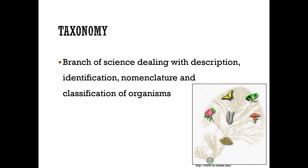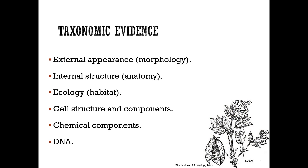Taxonomy is the branch of science dealing with the description, identification, nomenclature, and classification of organisms. Evidence for taxonomy includes external appearance or morphology, internal structure or anatomy, ecology or habitat, cell structure and components, chemical components, and finally DNA.